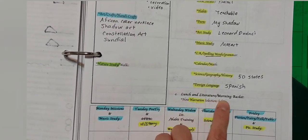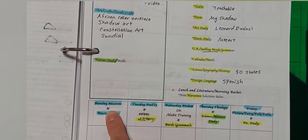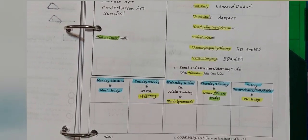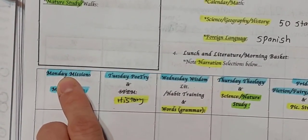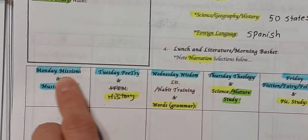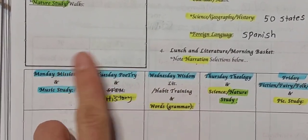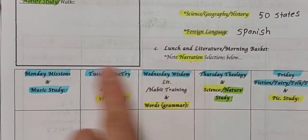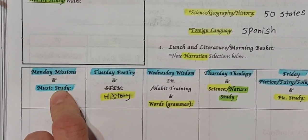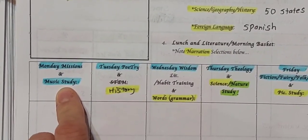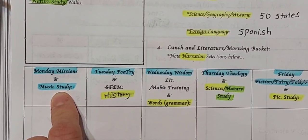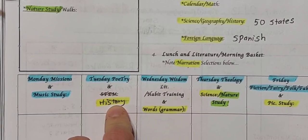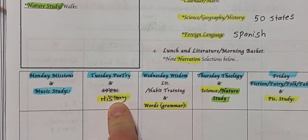It might happen in the morning or at lunch, but we have our morning basket selections, and we try to narrate at least once, do a narration at least once a week, an oral one. Those components or selections for our basket can be either used as a looping system, or you could do how I attempt to do it, which is assign certain books to certain days. So Monday missionary stories and music study, meaning like little flashcards where you can identify the musical instrument and what family it's in.